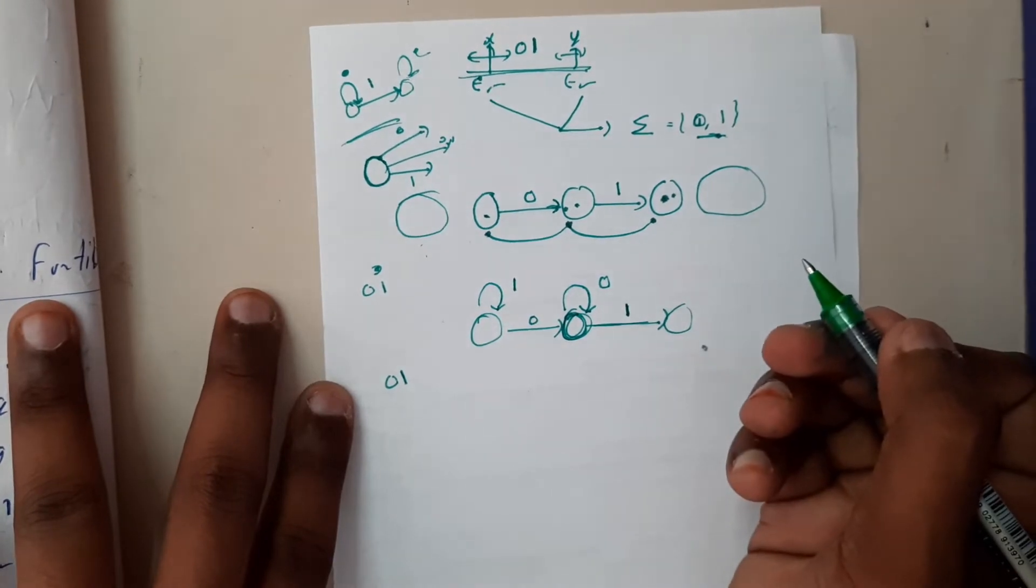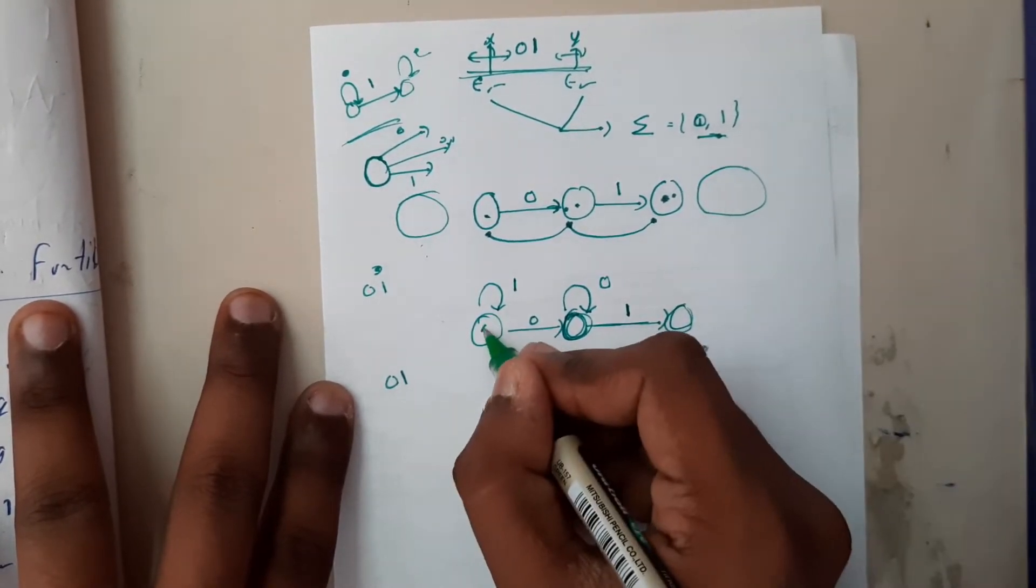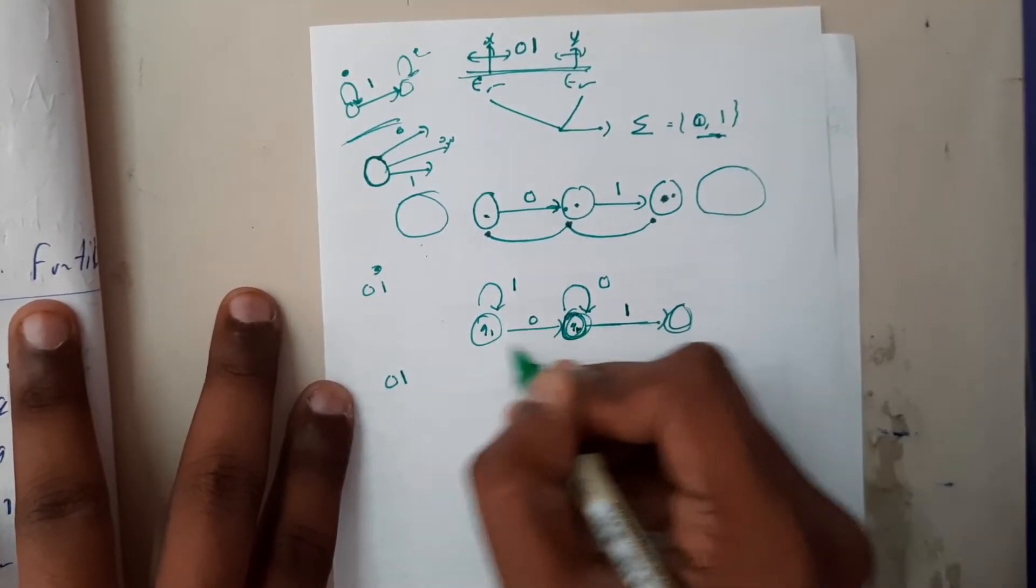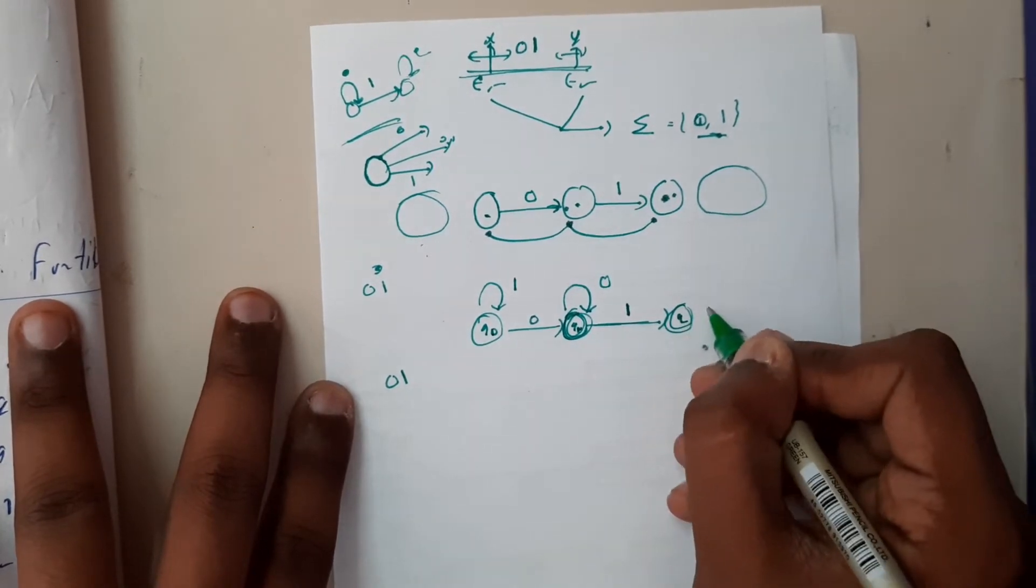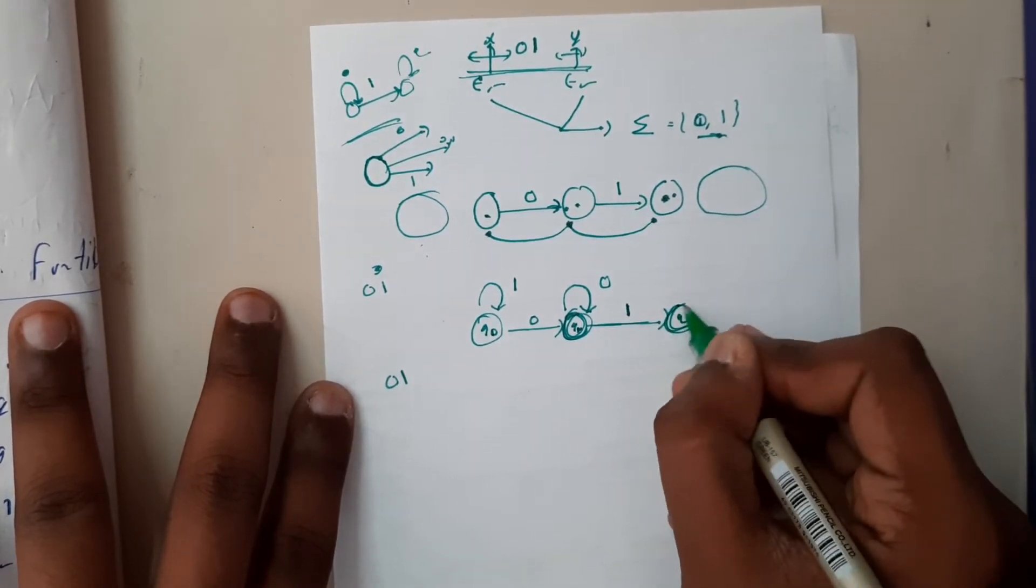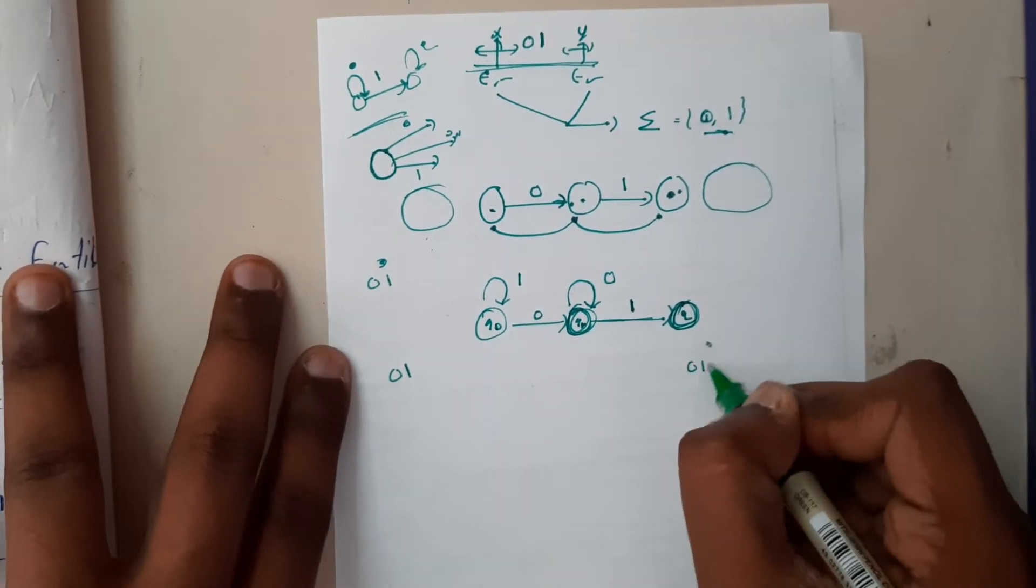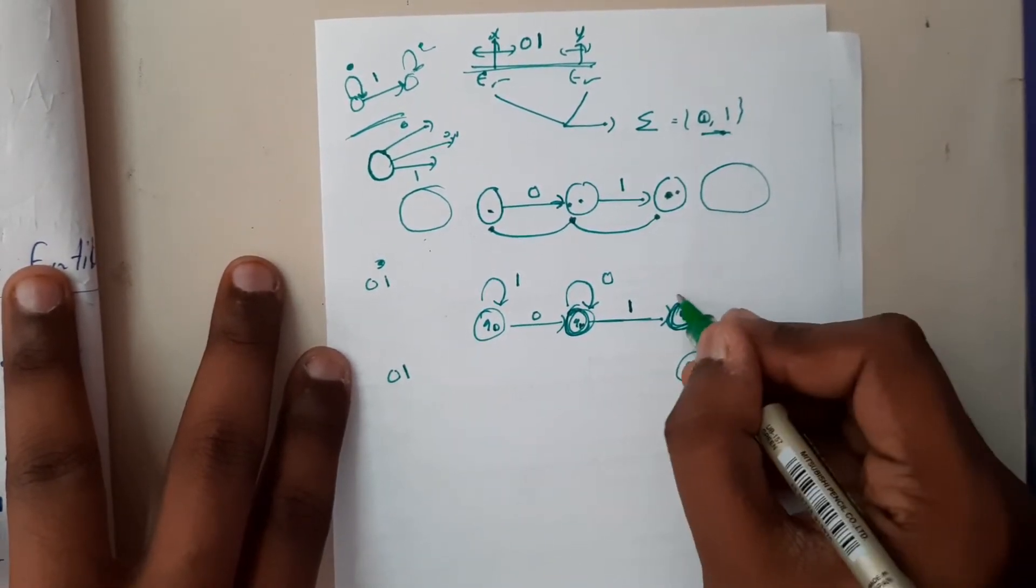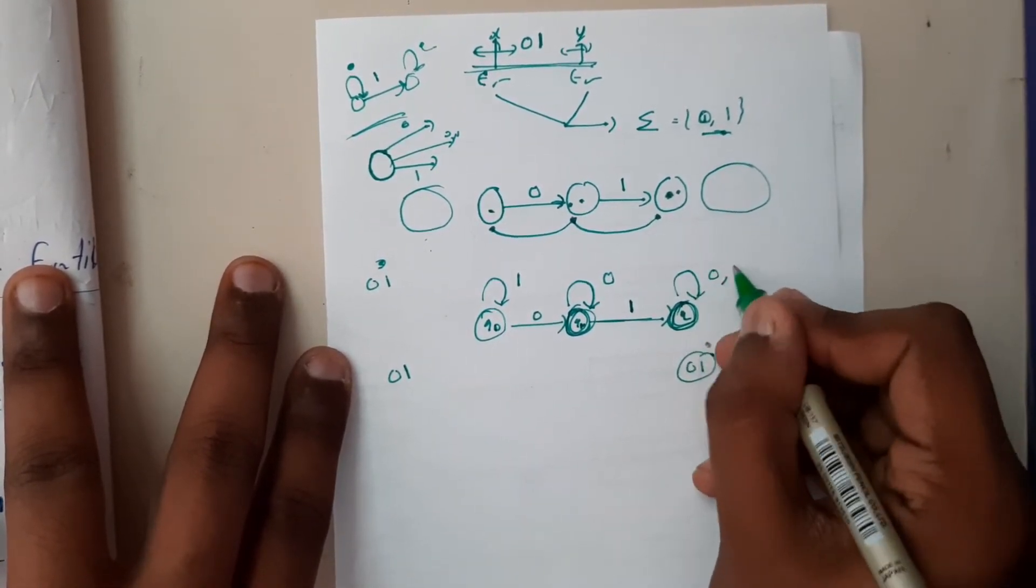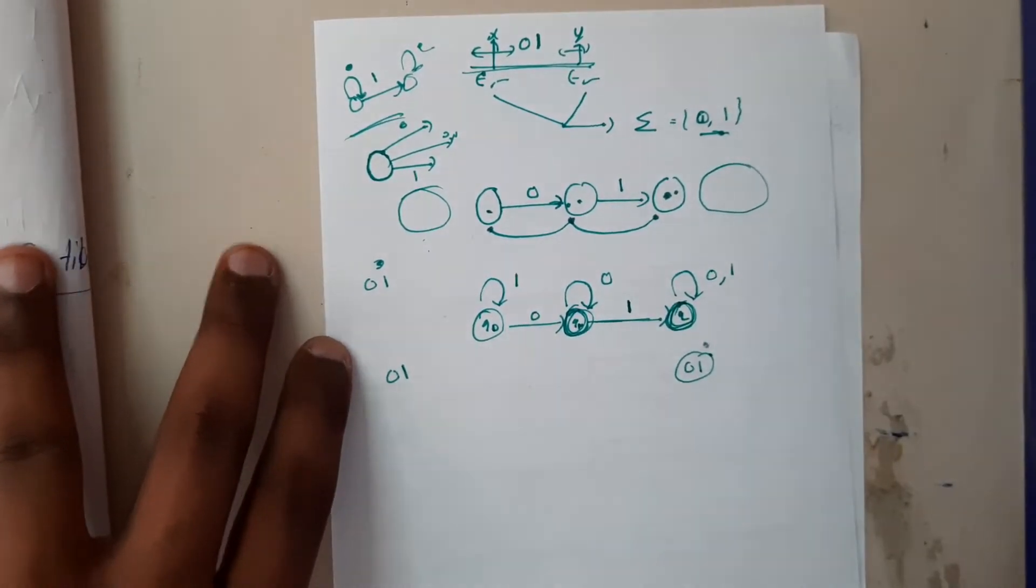Here also initially we can have anything, one. This is our diagram: q0, q1, q2. Once you reach the final state, is it compulsory that it should end with zero one? No, you can have anything, so you can just make it like this: zero comma one. On any continuation it will be having zero one.